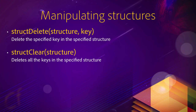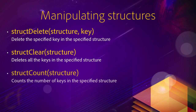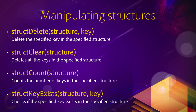Another function is structClear(). In that case, I just have to tell that function which structure I want to operate on, and that function will delete all the keys of the structure passed in the parenthesis, leaving an empty structure at the end. We also have structCount(), which counts the number of keys in the specified structure. And finally, a very practical function: structKeyExists(). We pass the name of a structure and the name of a key, and that function will check if the specified key exists in the specified structure. This is a very practical and common way of checking if an information exists.